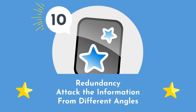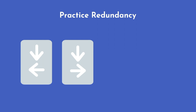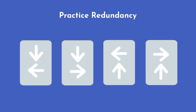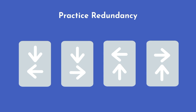Number 10: redundancy. Attack the information from different angles. Most of us practice the information we need to learn in only one direction, but come test time, that can lead to problems. For this reason, I recommend you practice redundancy with your Anki cards — learn to practice the information from more than just one direction.